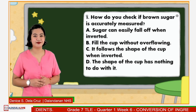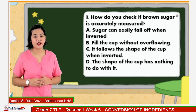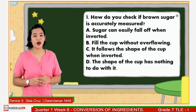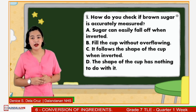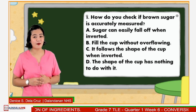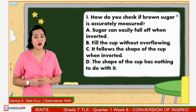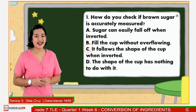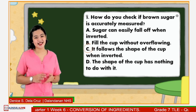Lastly, number 5: How do you check if brown sugar is accurately measured? Is it A: Sugar can easily fall off when inverted? B: Fill the cup without overflowing? C: It follows the shape of the cup when inverted? Or D: The shape of the cup has nothing to do with it? Very good! The answer is letter C. It seems that you fully understood the lesson last week.